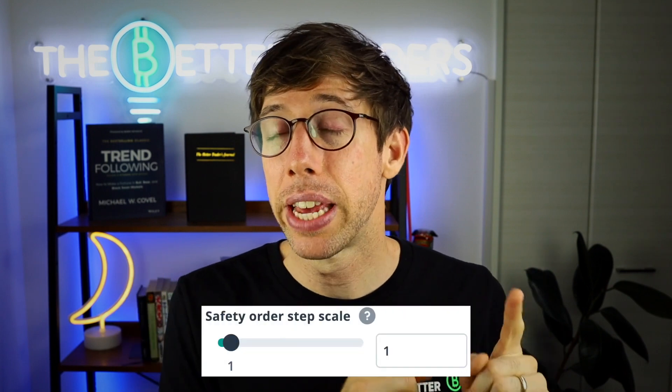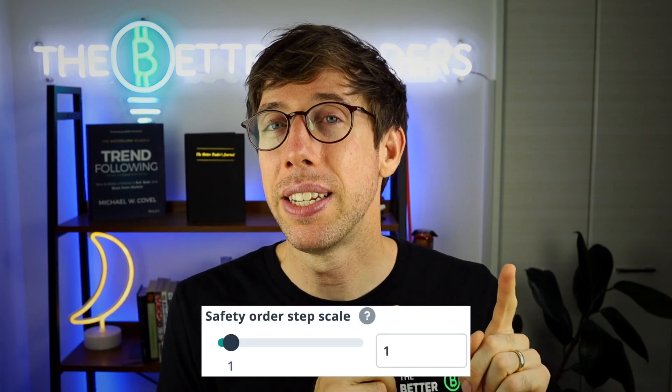The safety scale option is similar to volume, except now we're thinking about the distance. So let's say that the safety deviation percentage is five. If we have our safety scale set to one, then it's going to be five, five, five, five, five — again with five safety trades.